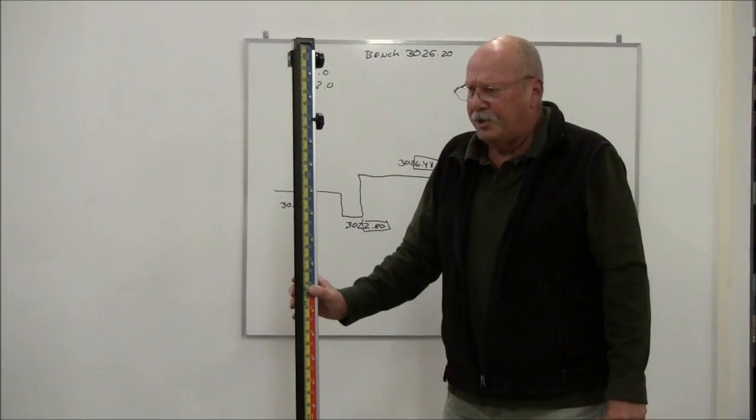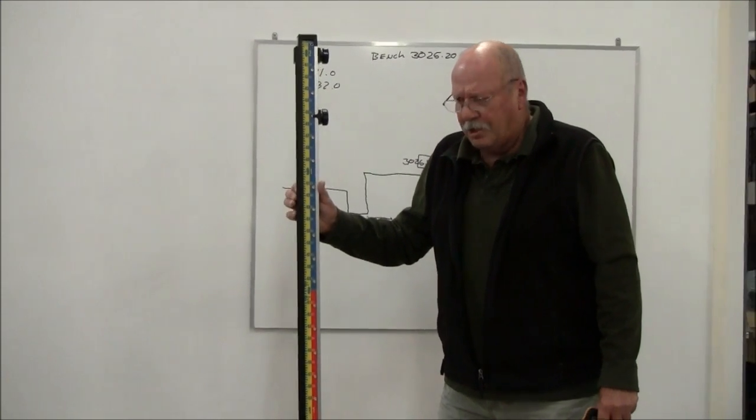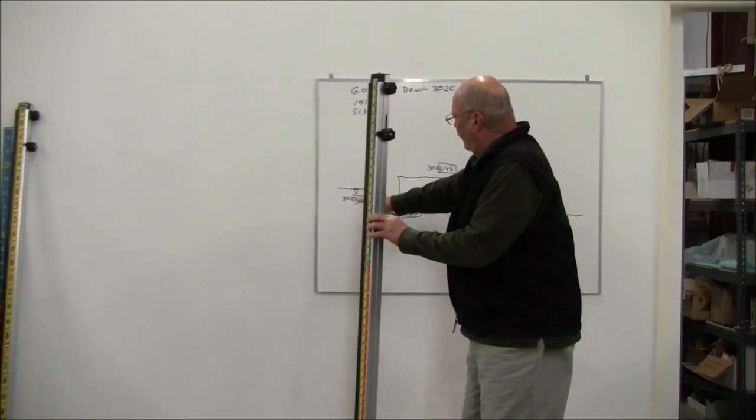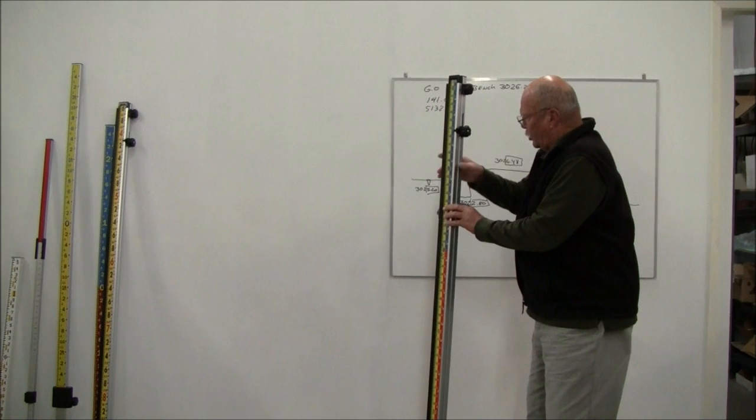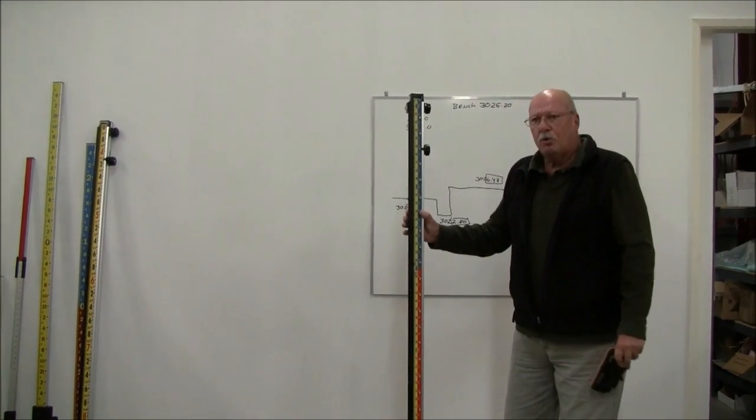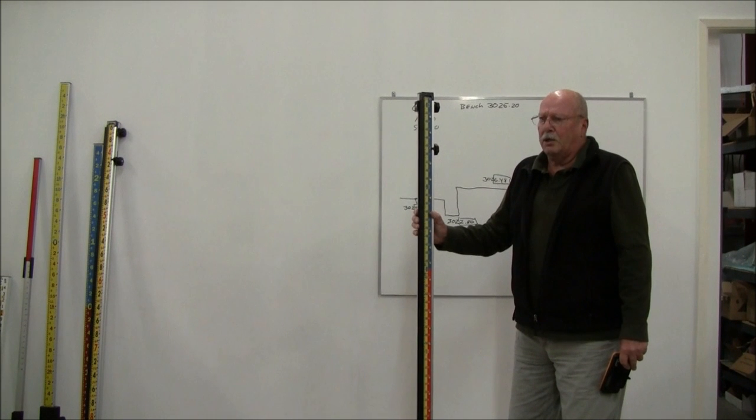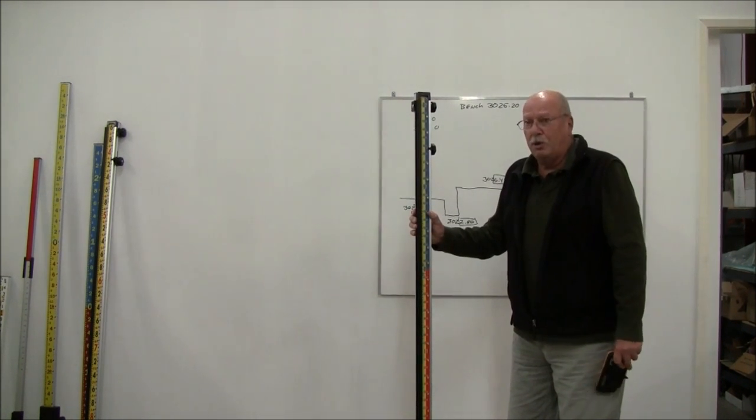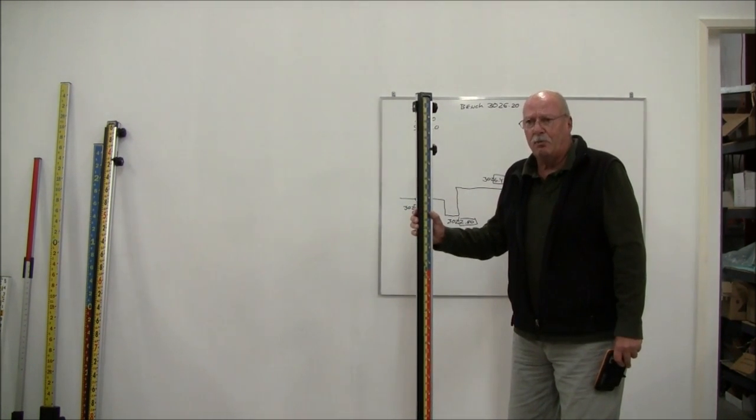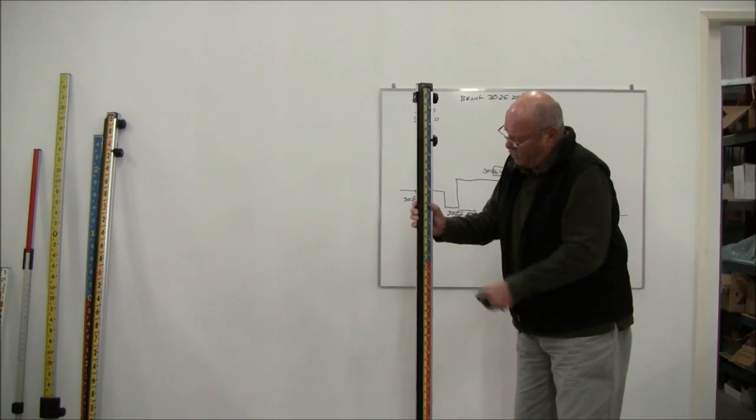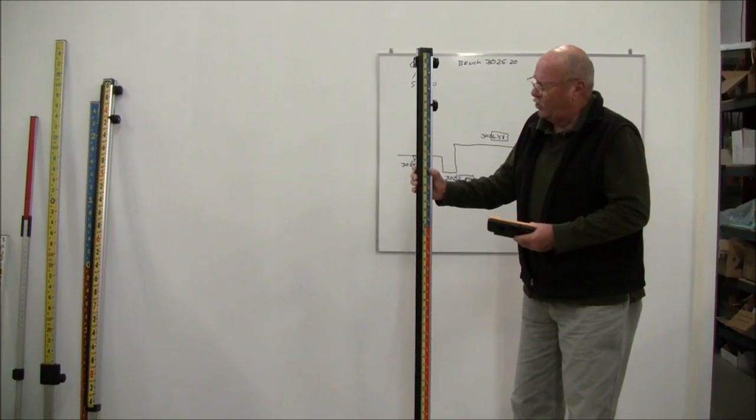This one is called the GR-1000. It reads in feet, tenths, and hundredths true elevation above your bunch elevation or below, but it also reads cut and fill. So if you're a contractor that's doing a lot of work, like pad work or whatever, where you just want to know if you're high or low from some reference point, this rod would be a good choice for you.